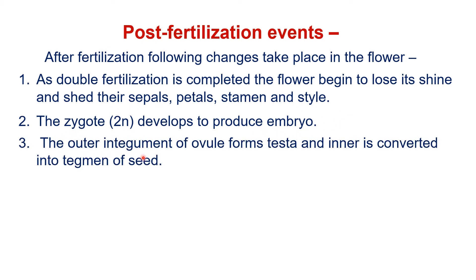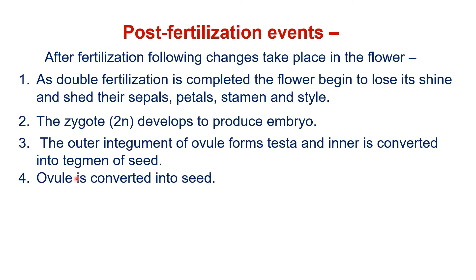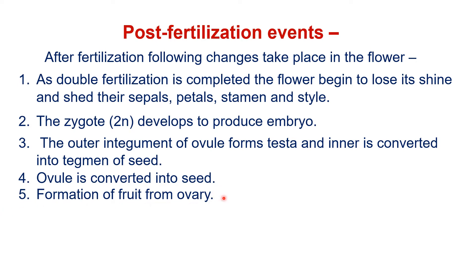Third, the outer integument of the ovule forms the testa and the inner is converted into the tegmen of the seed. Fourth, the ovule is converted into a seed, and fifth, there is formation of fruit from the ovary.